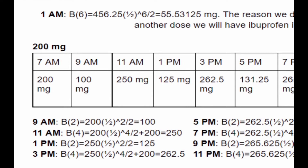We now put 250 into the formula instead of 200 because that's our new dose amount, and we reset the hours. At 1pm two hours has passed since the last dose, giving us 125 mg. At 3pm another four hours has passed which means we take another dose, so we add 200 and get 262.5 mg.